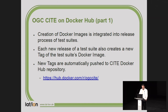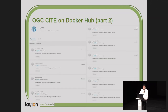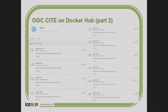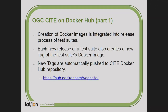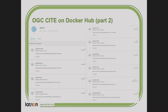We have a Docker repository and provide images for selected test suites. When a new release is created, a new Docker image is automatically created and pushed to that repository. You can check the current status to see which test suites already have a Docker image. It's very easy to use — just one command to download and run the test suite. There's a short manual in the description of the Docker repository.